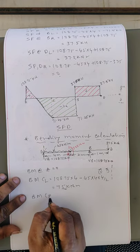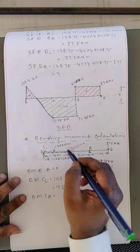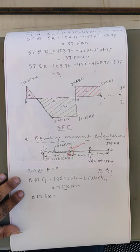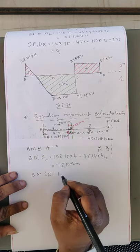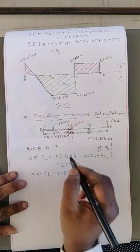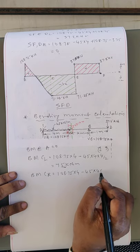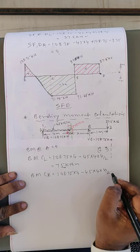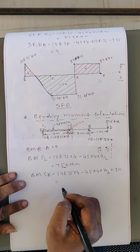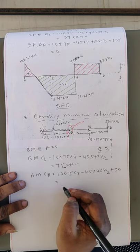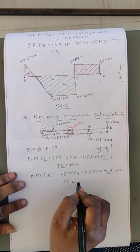Bending moment at C right: now the 30 kilonewton meter clockwise moment is included. It is 108.75 × 4 − 45 × 4 × 2 + 30 = 75 + 30 = 105 kilonewton meter.